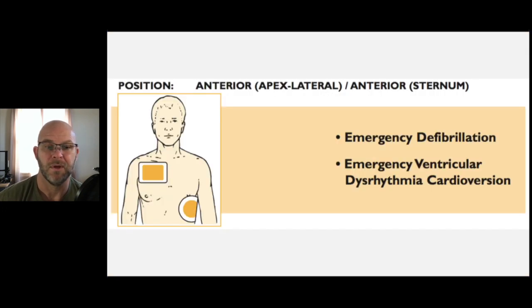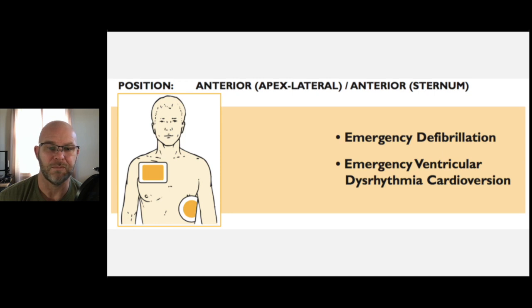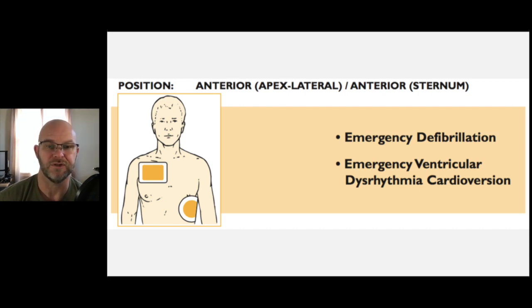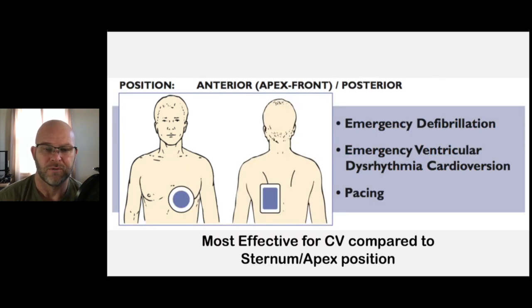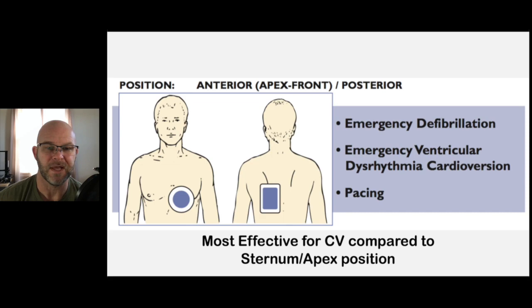Defibrillation is a massive effective refractory period for V-fib and V-tach — you want to stop all activity, put everything refractory, and hopefully everything starts back correctly. The sternum-apex location was where the old paddles went, but your best opportunity is anterior-posterior — it's the most effective pacing position and very effective for defibrillation and cardioversion. There was a study where all the cardioversion attempts that failed with sternum-apex were switched to anterior-posterior and succeeded on the first try. Anterior-posterior is by far a superior method.